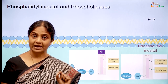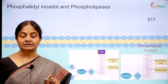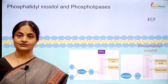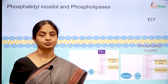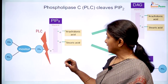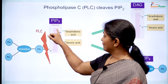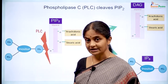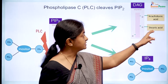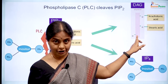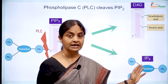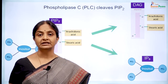Phosphoinositides can be acted upon by enzymes also found in the cell membrane called phospholipases. There are two important phospholipases: phospholipase C and phospholipase A2. Phospholipase C acts on phosphatidyl inositol bisphosphate and cleaves the molecule to give a diacylglycerol molecule and an inositol triphosphate — both of which are important signaling molecules.